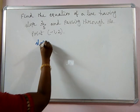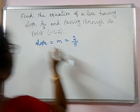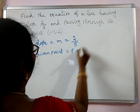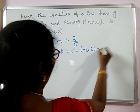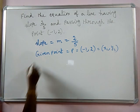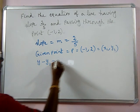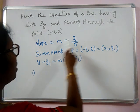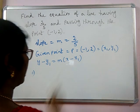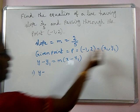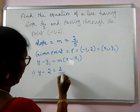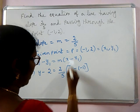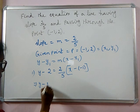Here, slope m = 2/5. The given point is (−1, 2); let us take this as (x₁, y₁). Using the point-slope formula y − y₁ = m(x − x₁), let us substitute the values of m and (x₁, y₁). Substituting: y − 2 = (2/5)(x − (−1)).